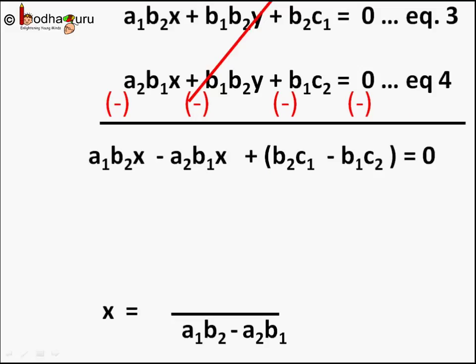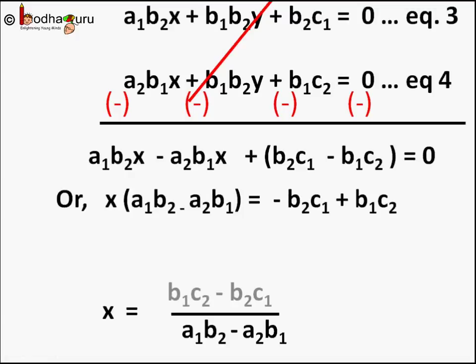Taking X as common: X(A1B2 minus A2B1) equals B1C2 minus B2C1, or X equals (B1C2 minus B2C1) divided by (A1B2 minus A2B1). This means using this formula we can directly find the value of X by putting in the values of these coefficients. If we put this value of X into any equation, say equation 1, we can get Y in terms of the coefficients.